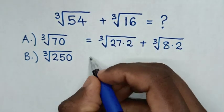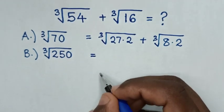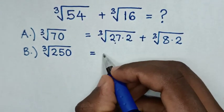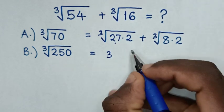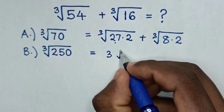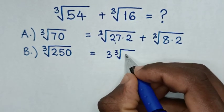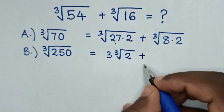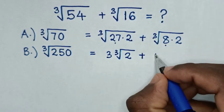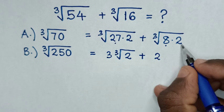Then it will be equal to cube root of 27 is 3 times cube root of 2, plus cube root of 8 is 2 times cube root of 2.